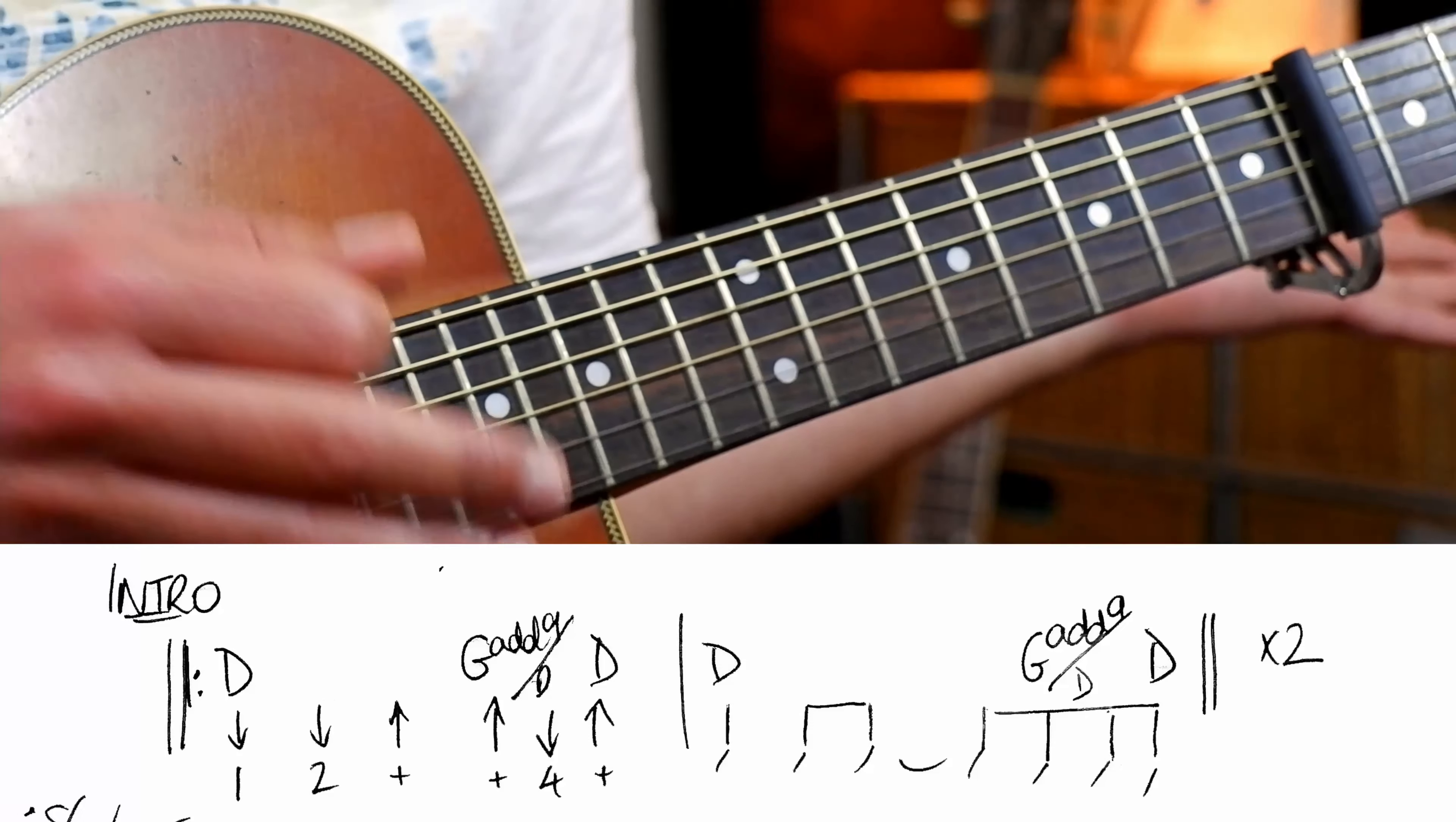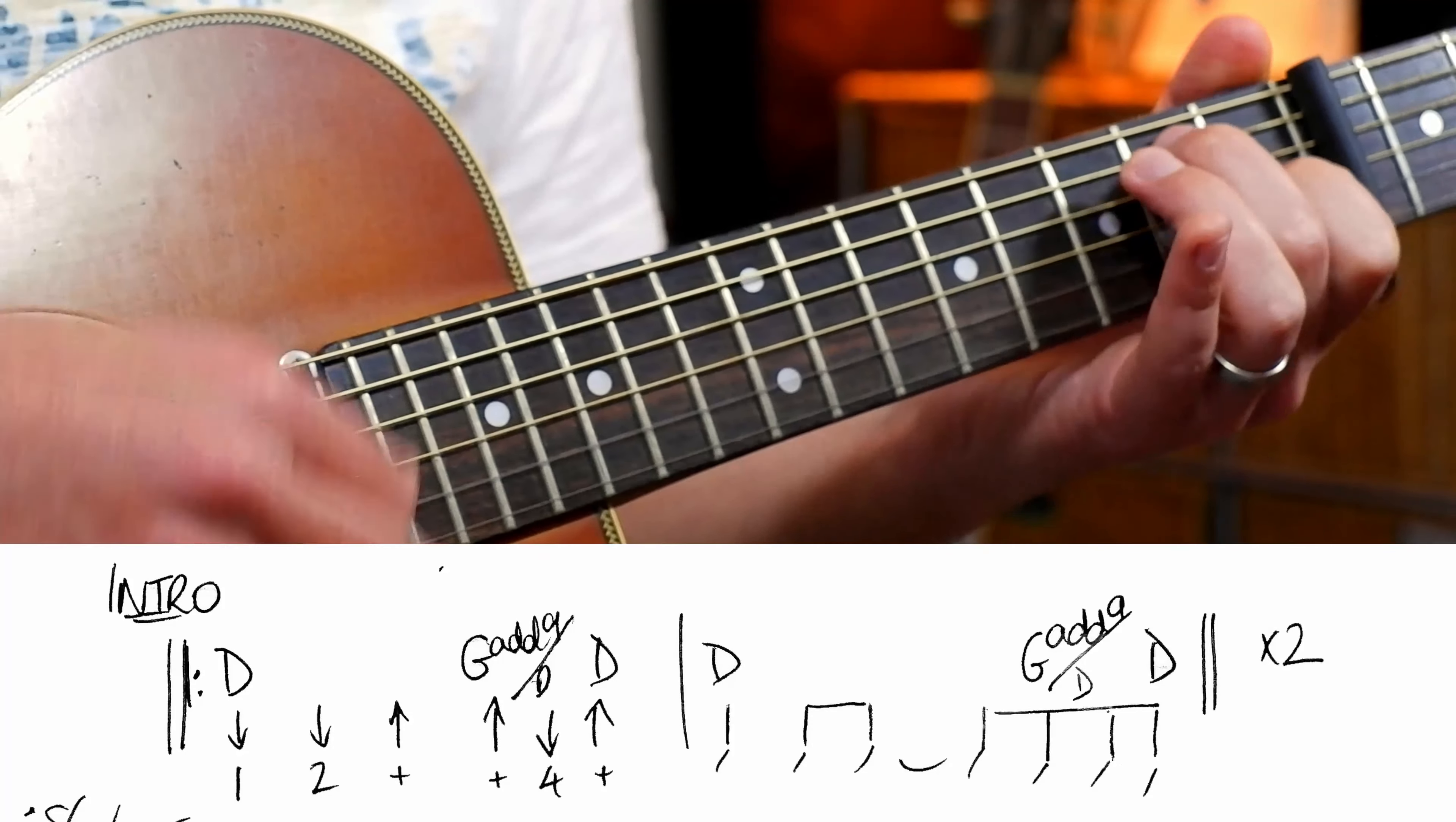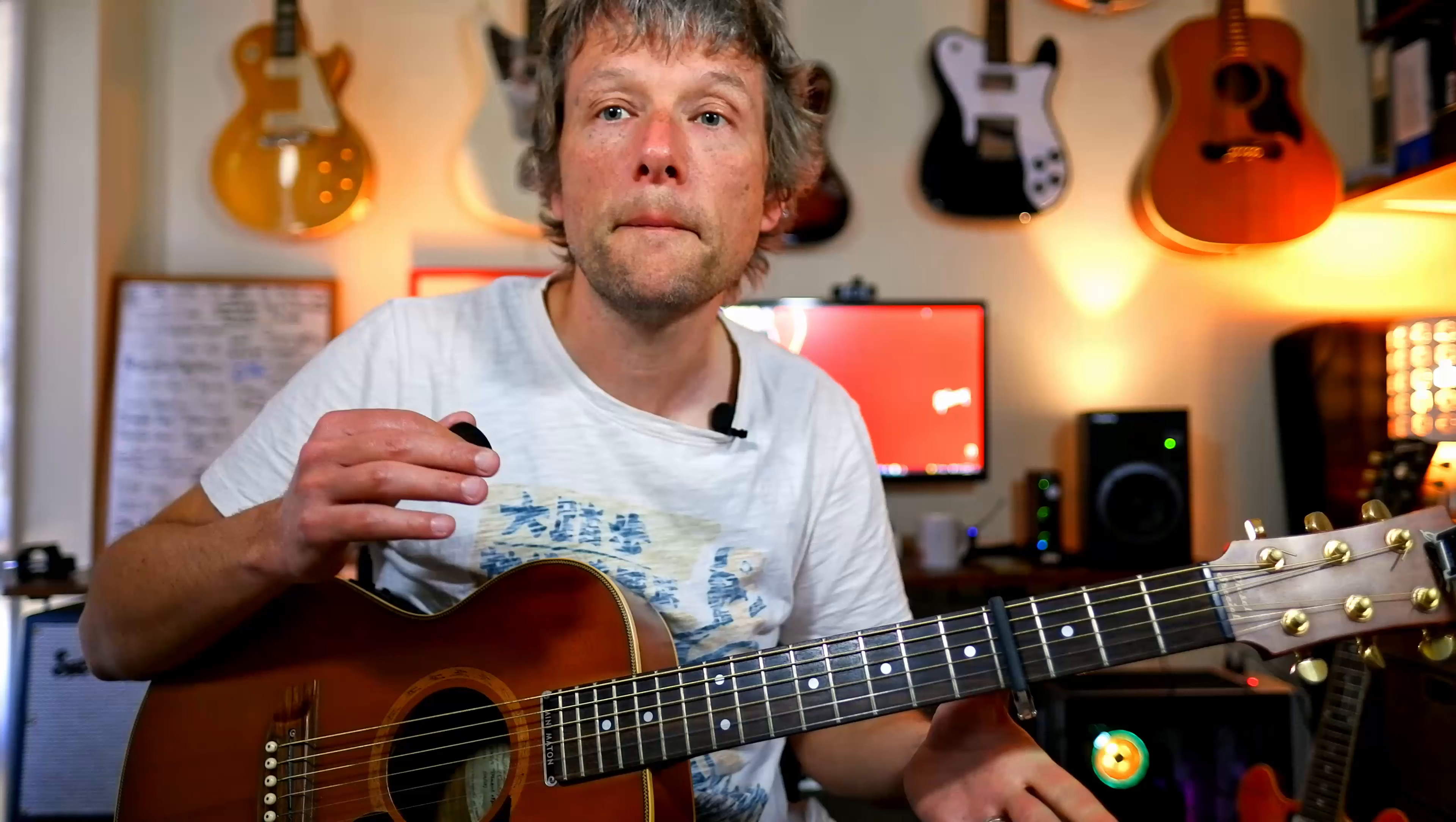So open is just a D. So we're going to go down down up and then on the and and the four so we've got one and two and three and four. Nice. So that basically repeats four times that one bar. One and two and three and four. One and two and three and four. Okay?